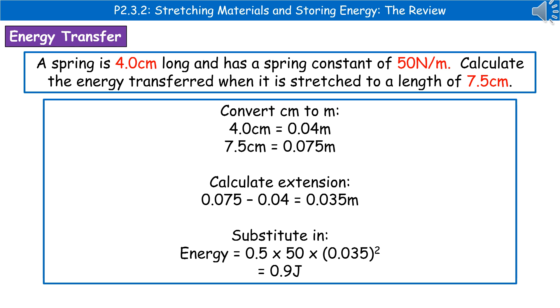Then we're going to calculate the extension. So we know that our spring is changing from 4cm to 7.5cm, so all we do is 0.075 minus 0.04, which gives us the extension of 0.035 meters.